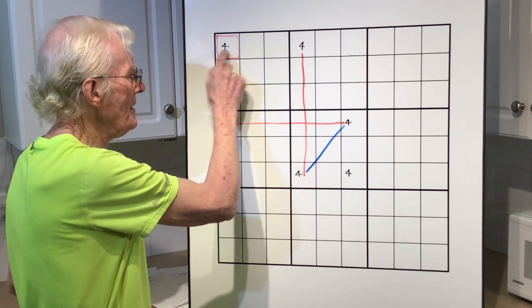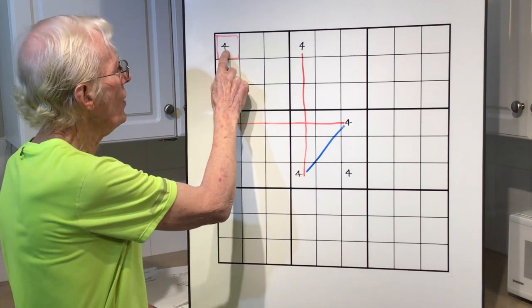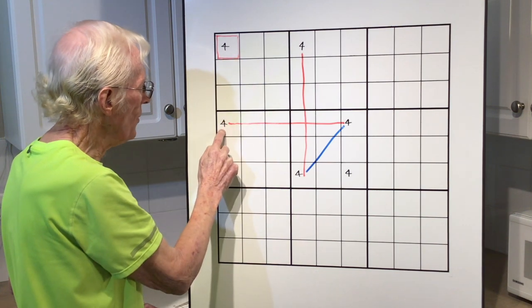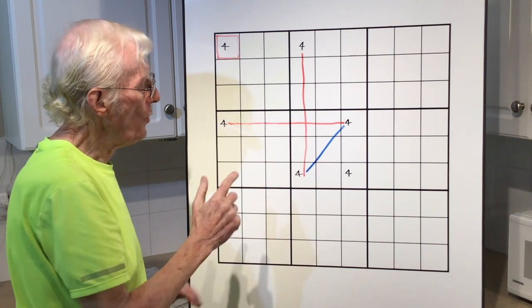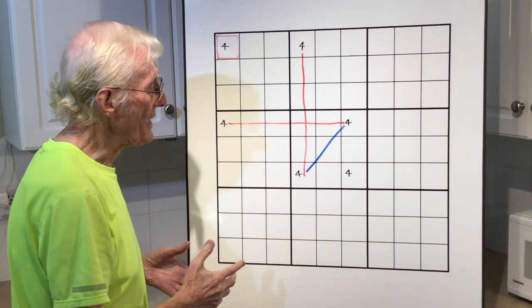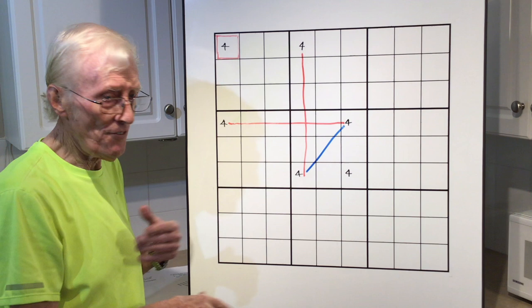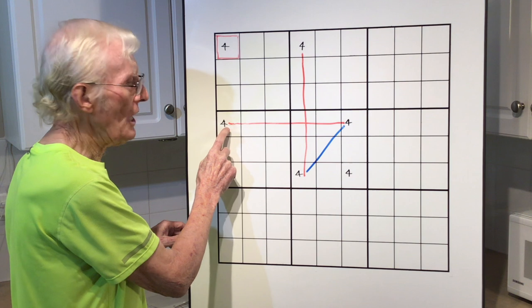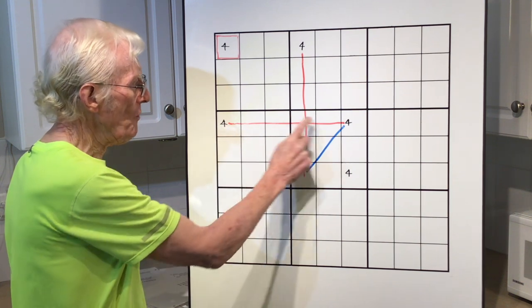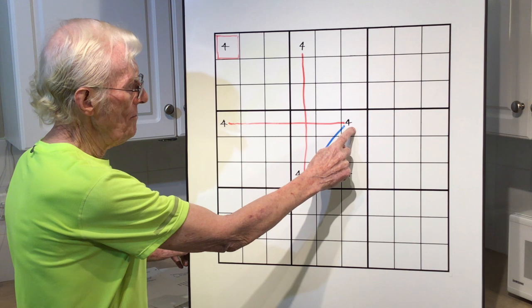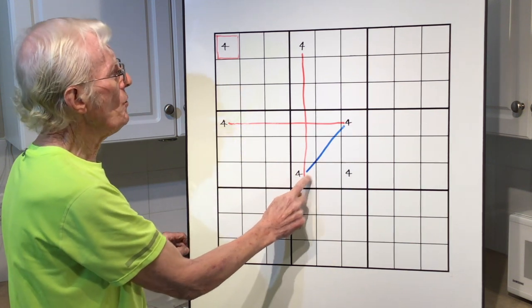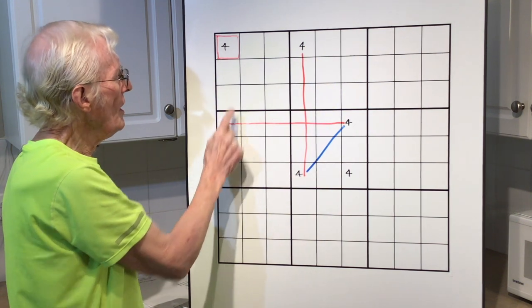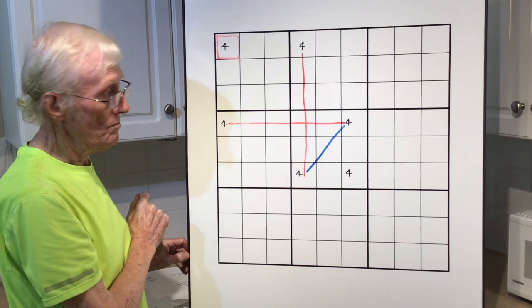Let's take this 4 up in here. This 4 can see that 4. This 4 can see that 4. In a strong link, one end will be true, one end will be false. Let's say this is a real 4. That will not be a real 4. This will be a real 4. And that will not be a real 4. But because this was a real 4, that can't be a real 4.